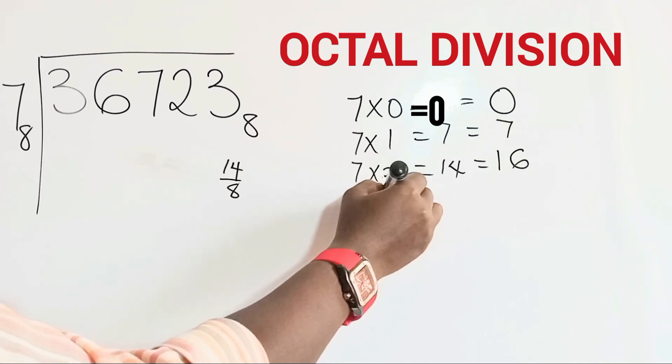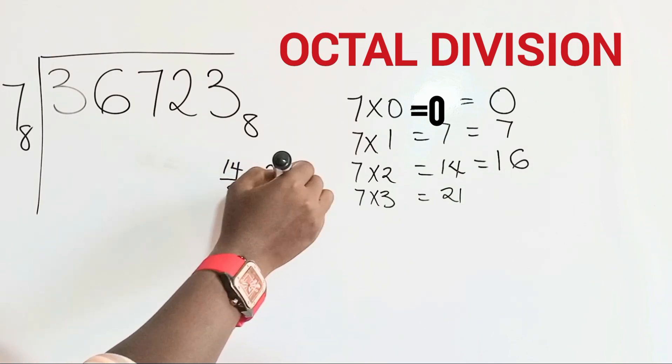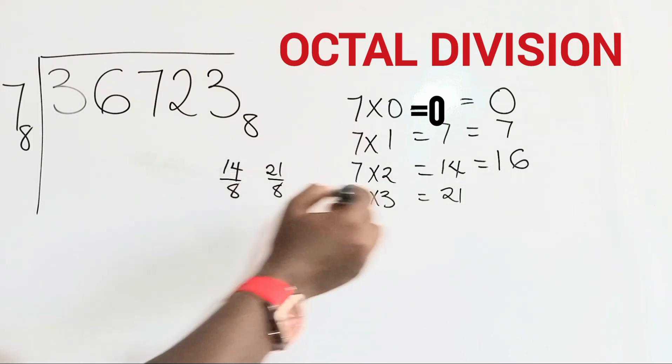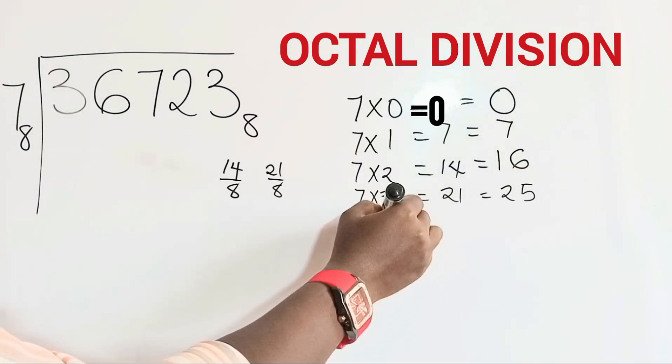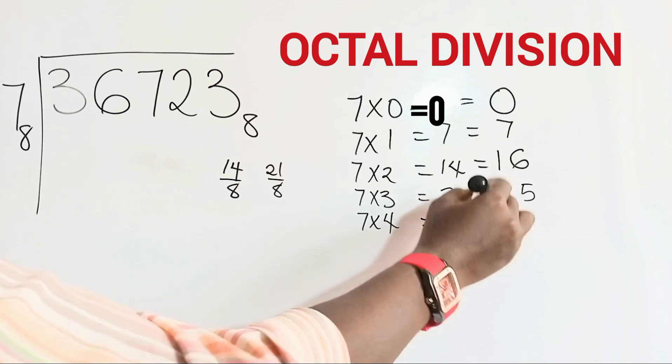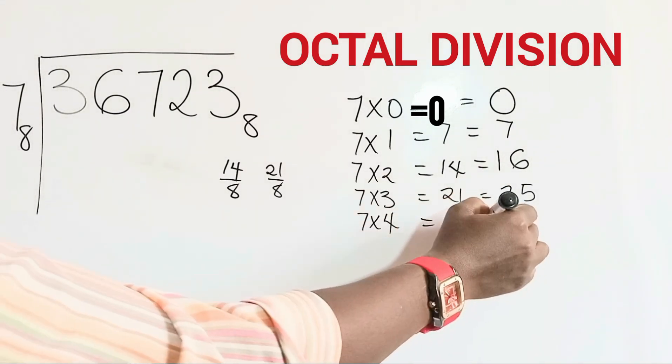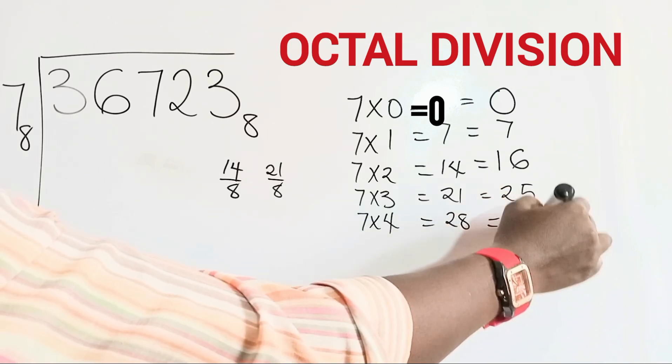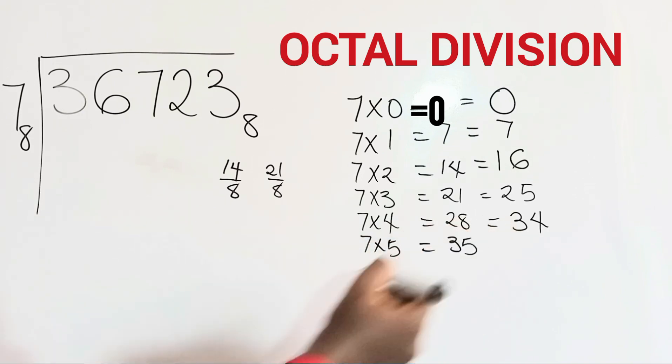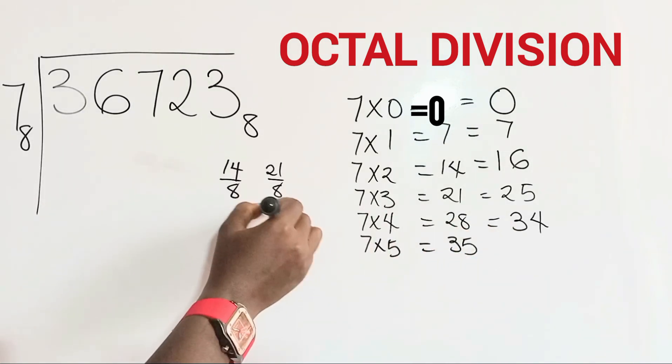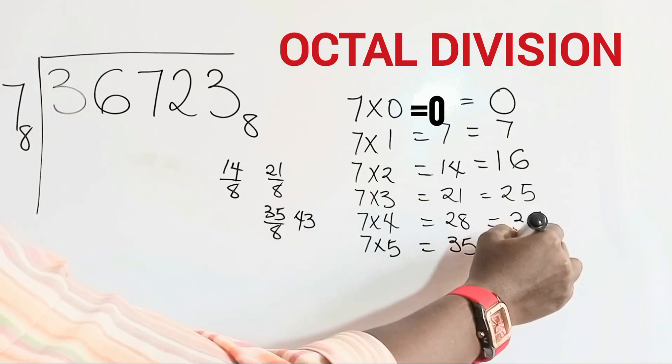Then we do 7 times 3, give us 21 in base 10. 21 in base 8 equals, 8 go into 21 two times, remaining 5. Then we have 7 times 4 equals 28 in base 10. In base 8, 28 divided by 8, we have 3 remaining 4. 7 times 5 equals 35 in base 10. In base 8, 35 divided by 8 equals 4 remainder 3, so we have 43.